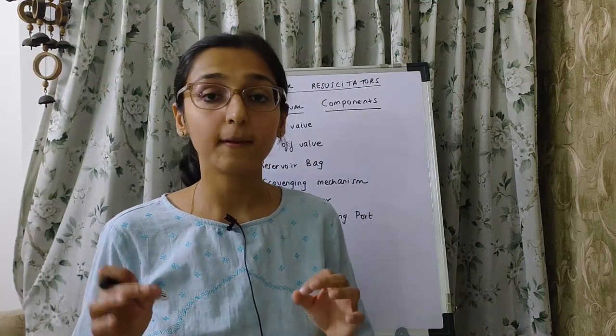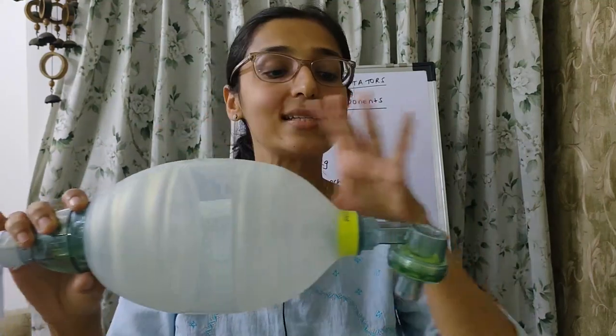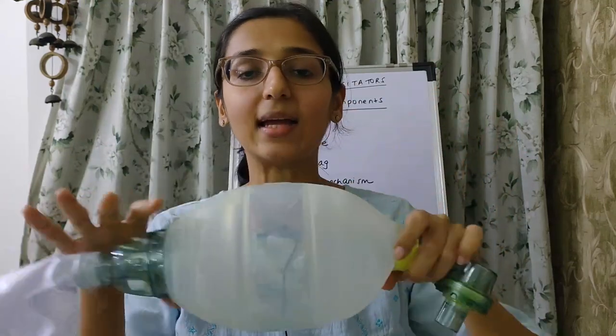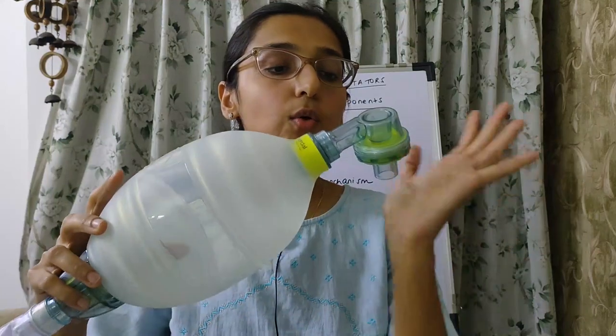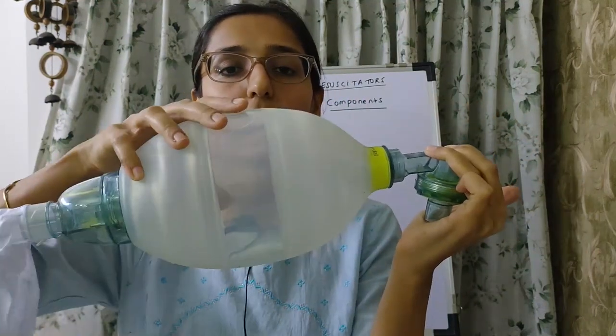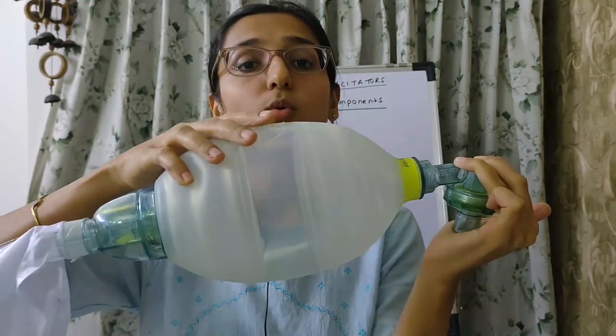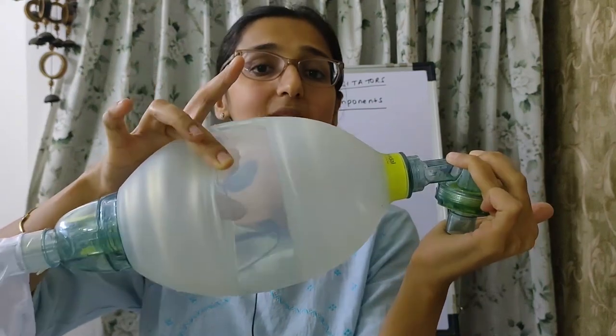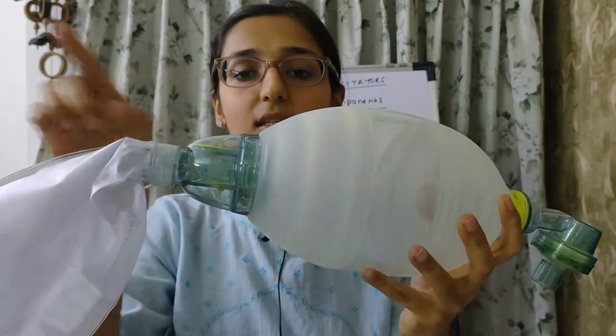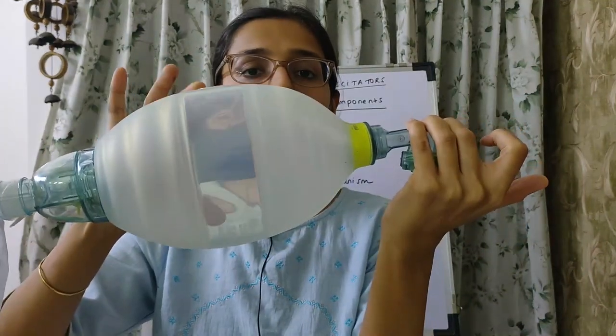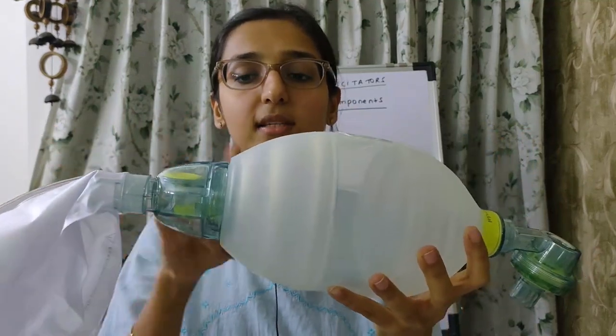Now let's see how to check the manual resuscitator. First, visually inspect it for any cracks, defects, or leaks. Second, occlude the patient port and try to compress the bag — you should not be able to compress it, confirming there is no retrograde gas leakage and the valve is patent.